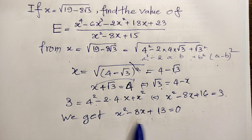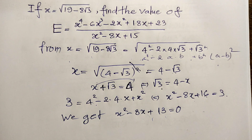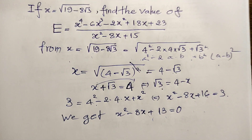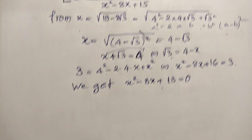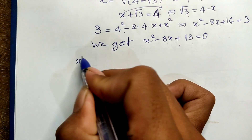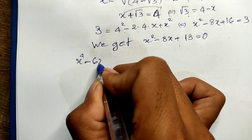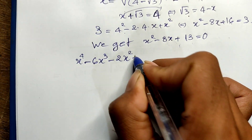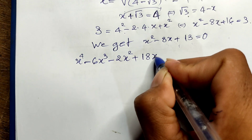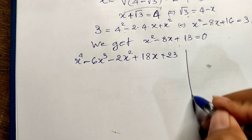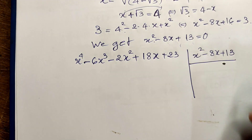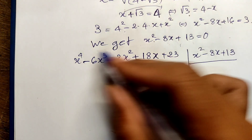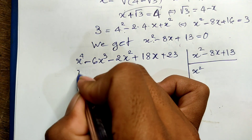Now I use this key equation x² minus 8x plus 13 equals 0 to find the value of the original expression. The strategy is to divide the numerator x⁴ minus 6x³ minus 2x² plus 18x plus 23 by the denominator x² minus 8x plus 13.